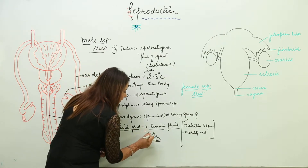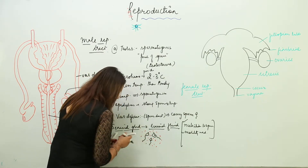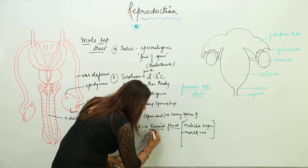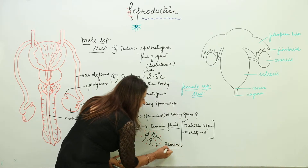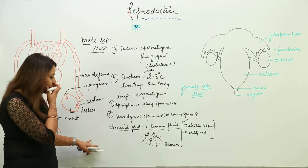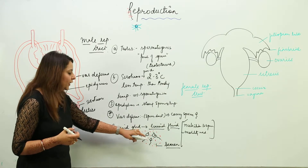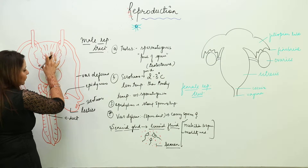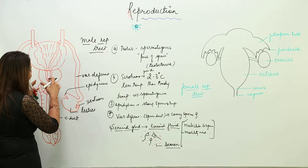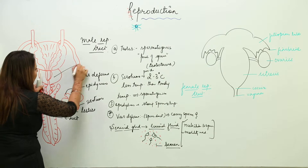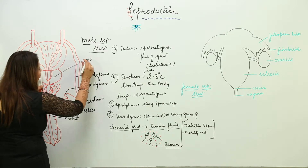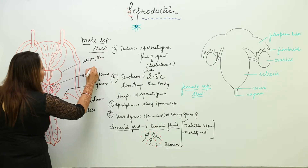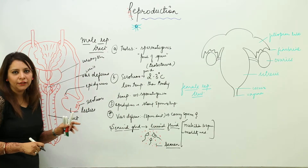When sperms get mixed with the seminal fluid, and also the secretions of the prostate gland and the bulbourethral gland, this mixture is now called semen. When it passes from the seminal gland, those secretions are added and it becomes semen. There is also the urethra and the urinary bladder.